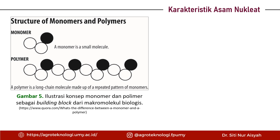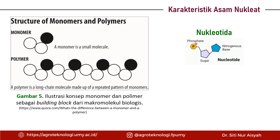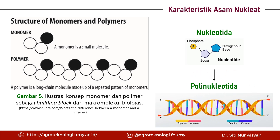Monomer dari asam nukleat itu adalah nukleotida, yang strukturnya punya tiga komponen: fosfat, gula, dan basa nitrogen. Ketika menjadi rantai nukleotida, kita menyebutnya sebagai polinukleotida atau rantai asam nukleat. Formasi double helix itu terjadi justru karena asam nukleat tidak hanya satu saja, tapi sudah berikatan dengan asam nukleat yang lain, sehingga kita bisa melihat yang namanya double helix.